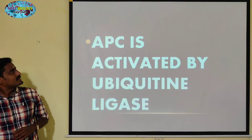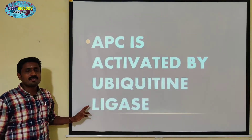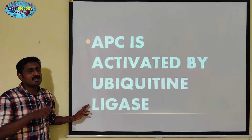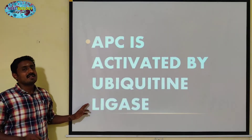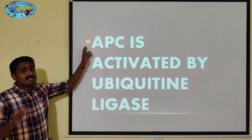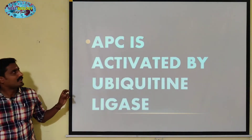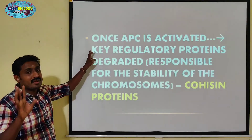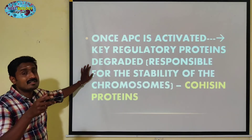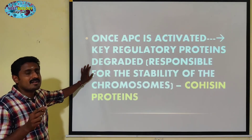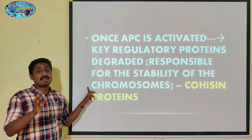The APC is activated by ubiquitin ligase activity. CDC20 functions as the ubiquitin ligase that helps activate the inactive APC. Once APC is activated, key regulatory proteins — that is cohesin — are degraded.